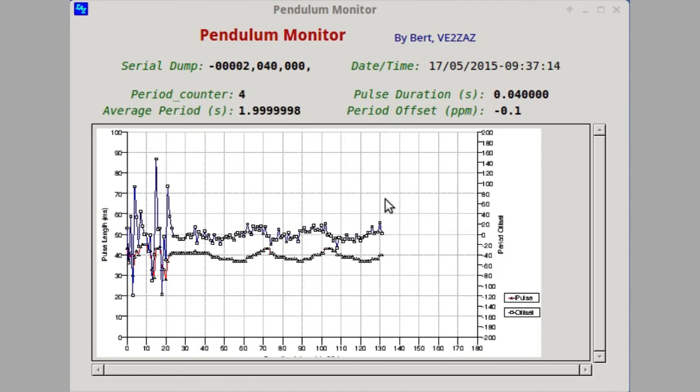Now, let's look at the software I use on my PC to monitor the pendulum for performance. This was written in Python. What you have here is two curves. And the top one shows the offset, measured offset from the crystal oscillator of that pendulum. And it's the offset from two seconds.